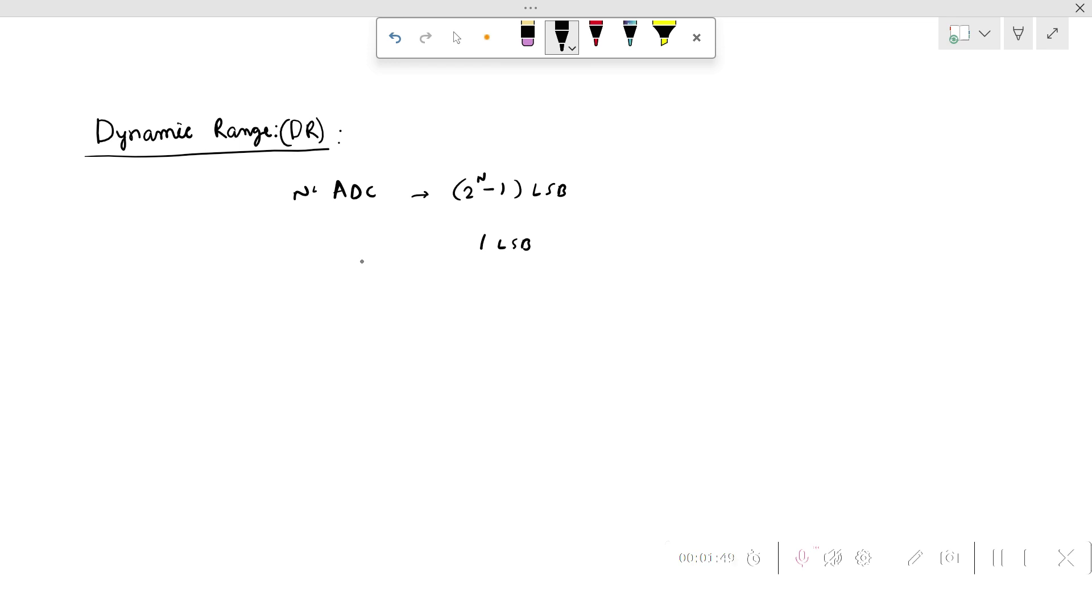In general, if we define the dynamic range of the ADC, it is the ratio between the noise floor of ADC and the maximum input. To define the dynamic range of the ADC, we can say DR is 20 log base 10 of (2^n - 1 times the LSB voltage) divided by 1 LSB.